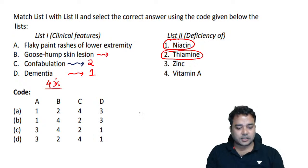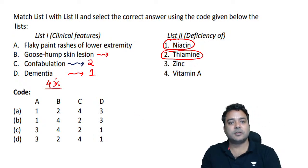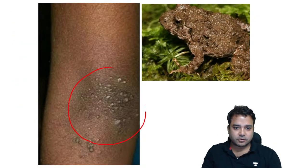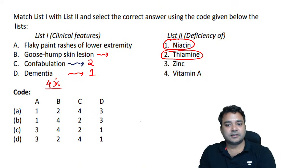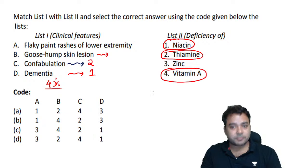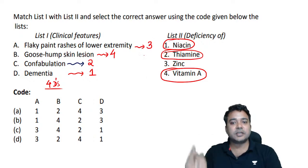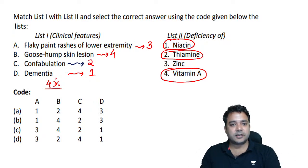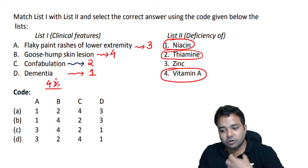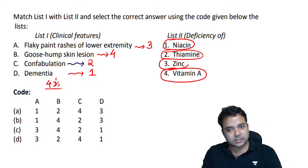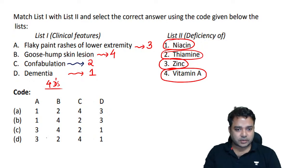Toad skin or phrynoderma due to follicular hyperkeratosis is a feature of vitamin A deficiency. Flaky paint rashes of lower extremity go with zinc deficiency — zinc deficiency causes hypogonadism and hyperpigmentation, with pigmentary changes seen in the lower extremity. Sequence goes with 3-4-2-1.